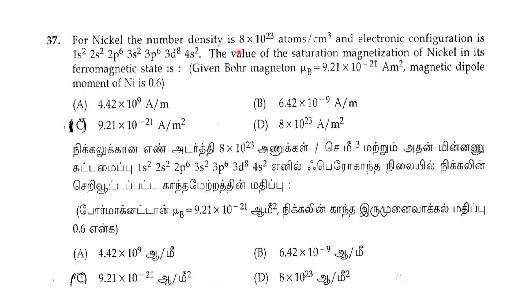For nickel, the density is 8.24 × 10²³ atoms per centimeter cubed, and the electronic configuration is 1s², 2s², 2p⁶, 3s², 3p⁶, 3d⁸, 4s². The value of the saturation magnetization of nickel in its ferromagnetic state is to be determined using the Bohr magneton value and the magnetic dipole moment of nickel.